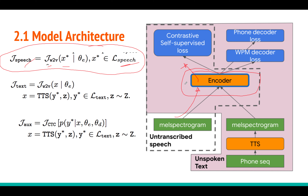Now, how do you inject text information into the encoder? You can't directly feed text because it is a different modality — text could be word embeddings — and the model is learning audio representations. The trick is: you take a bunch of text data, select a sentence, compute the phoneme sequence using a grapheme-to-phoneme converter, and then feed it to a text-to-speech engine.